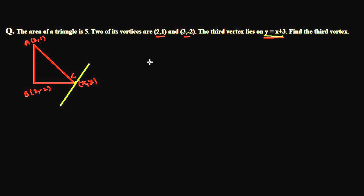The hint we have is that the third vertex lies on the line y = x + 3. So there is a certain line, and the third vertex C is situated on this line. We need to find the value of x and y. The strategy is to first find the area of this triangle in terms of x and y.